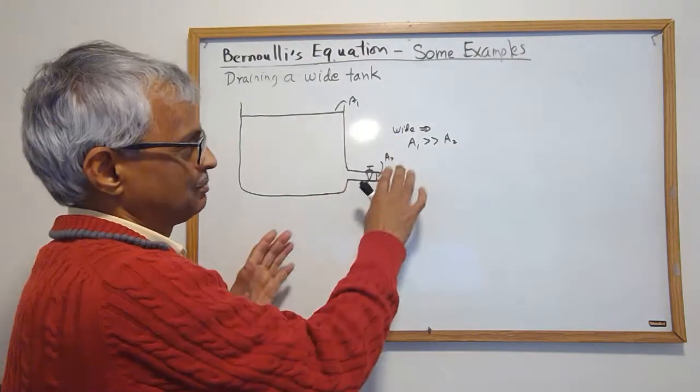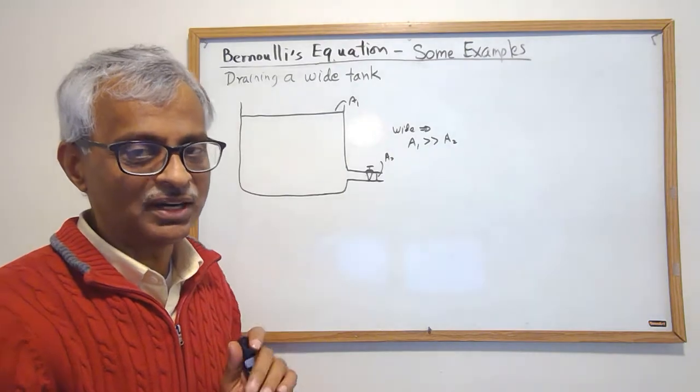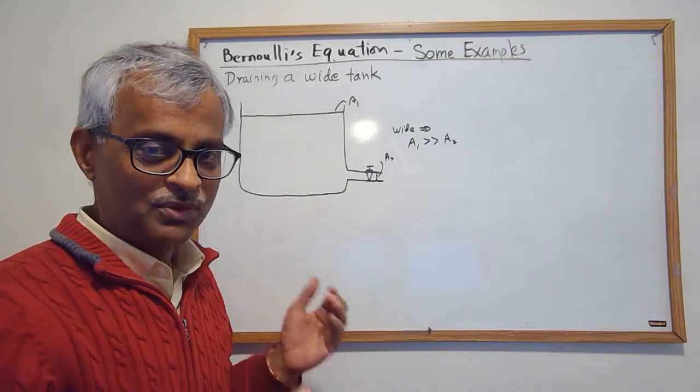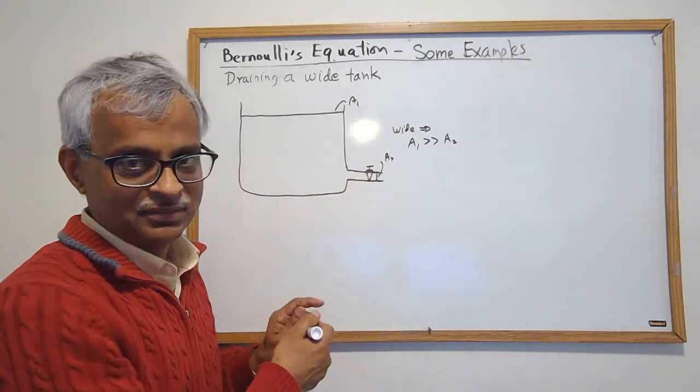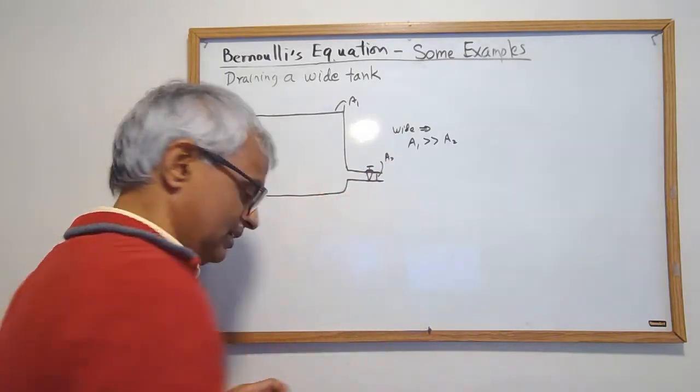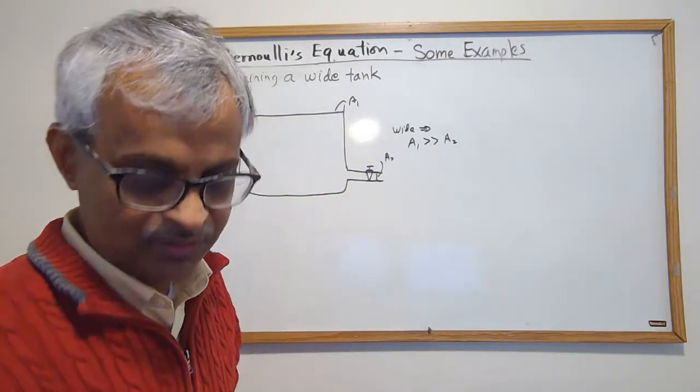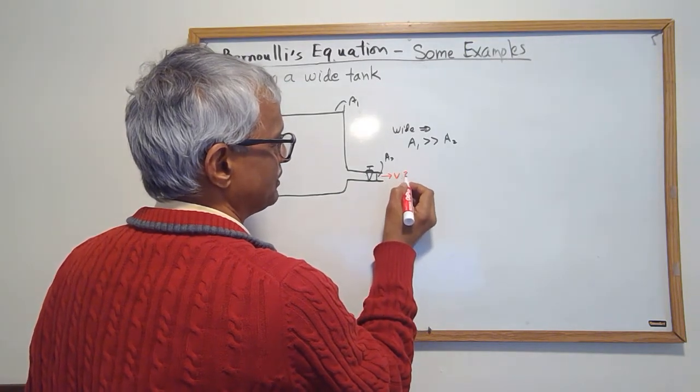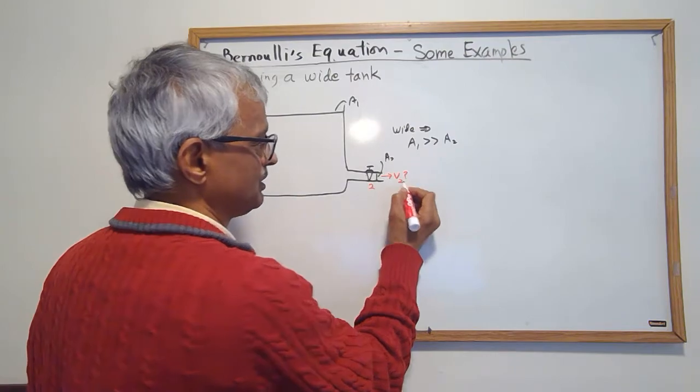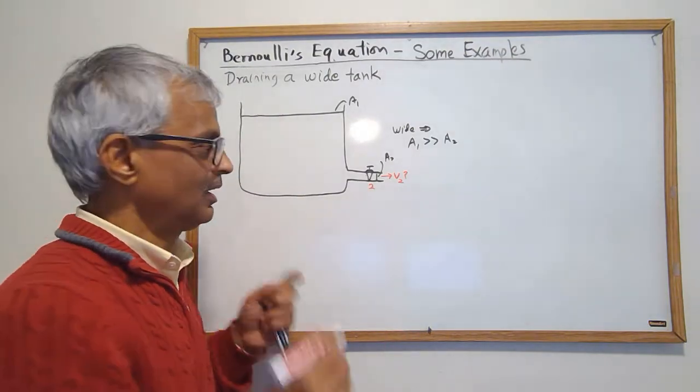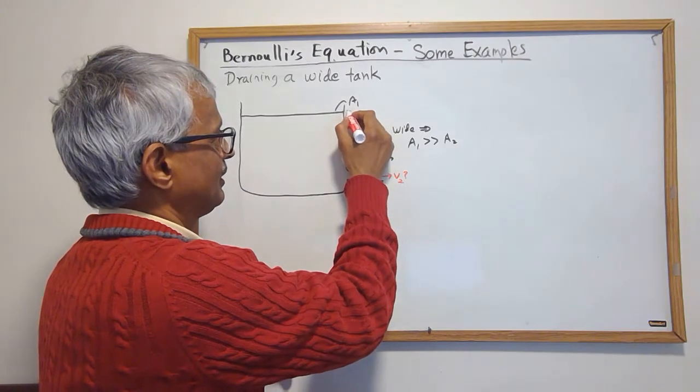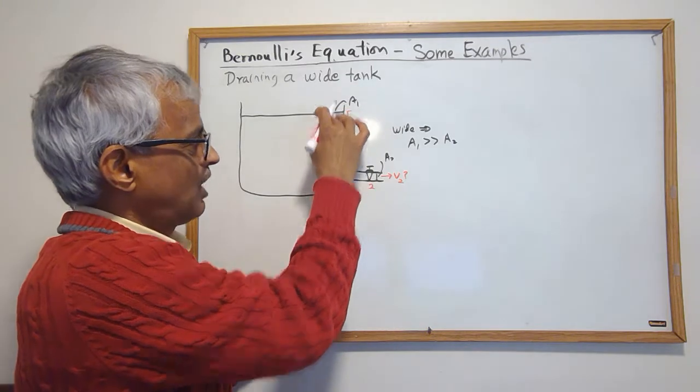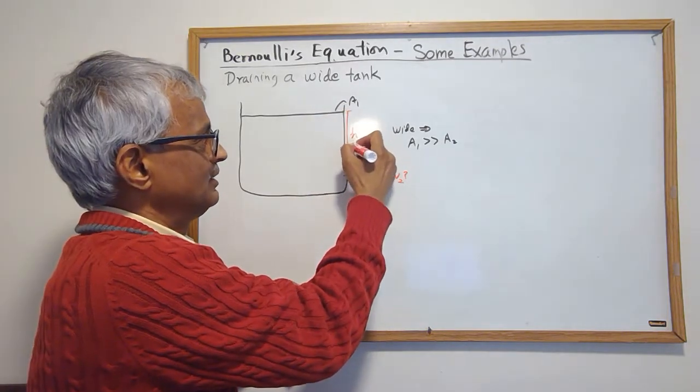By wide, I mean A1 is much much bigger than A2. You'll see why that is needed. I want to find out when I open this, what will be the speed? So the question is to find out what is speed V2 if the height at this instant from the top to the point where it comes out is H, and this is given.